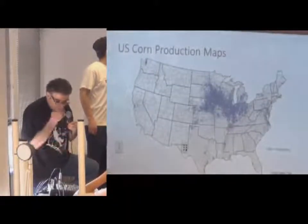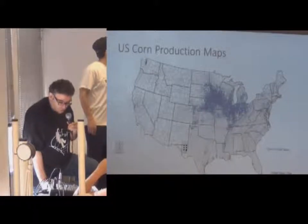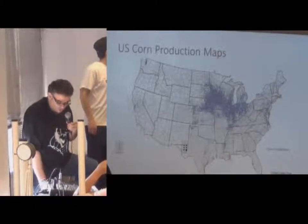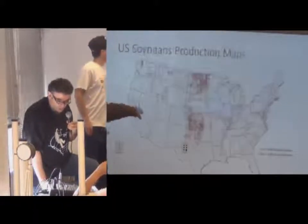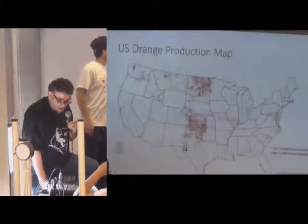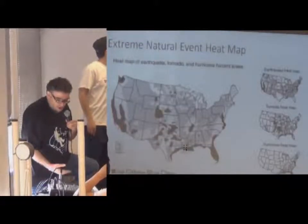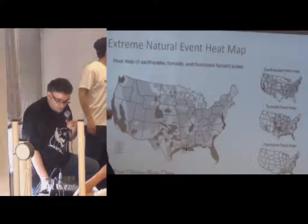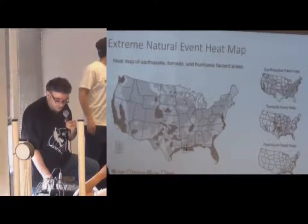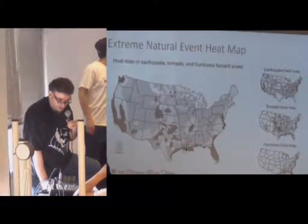In order to do that, we found where farmers throughout the United States grow corn, soybean, wheat, and orange. We also took data from USGS to determine where earthquakes, tornadoes, and hurricanes occur throughout the United States.